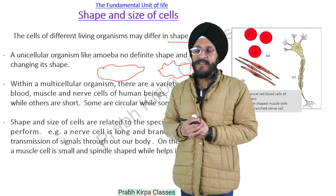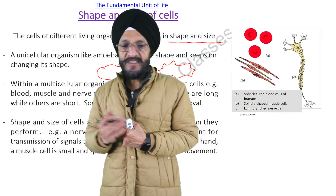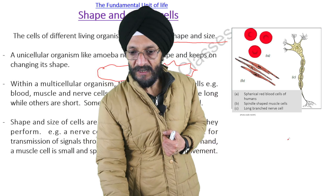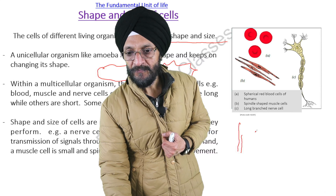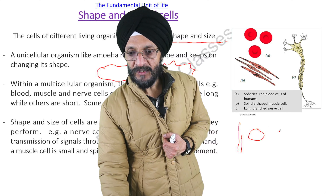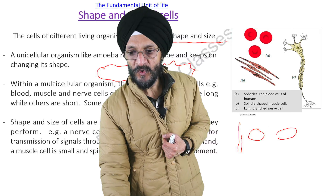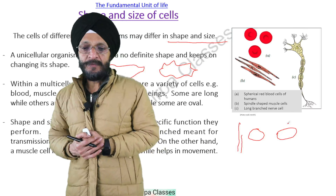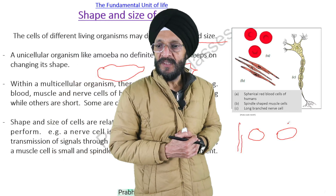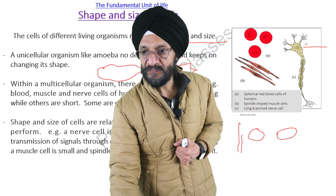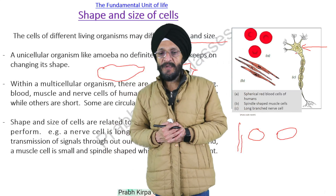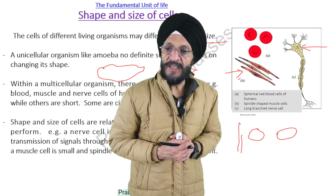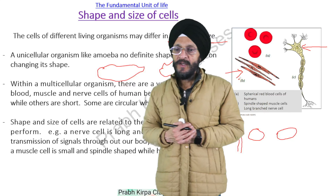Within multicellular organisms there are a variety of cells. The cells may be blood cells, muscle cells, or nerve cells. Some cells are long, other cells are short. Some cells are circular whereas others are oval shaped. The size and shape of the cells are related to the specific function they perform. A nerve cell is long and branched as it has to transmit signals throughout the body. The muscle cell is small and spindle shaped, which helps in movement.